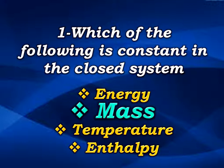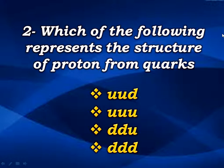The next question: which of the following represents the structure of the proton in terms of quarks? Quarks are small particles found inside protons and neutrons. The options are: uud, uuu, ddu, or ddd.